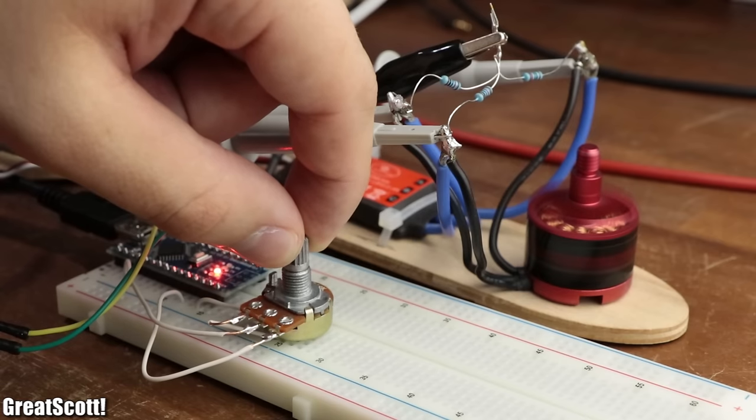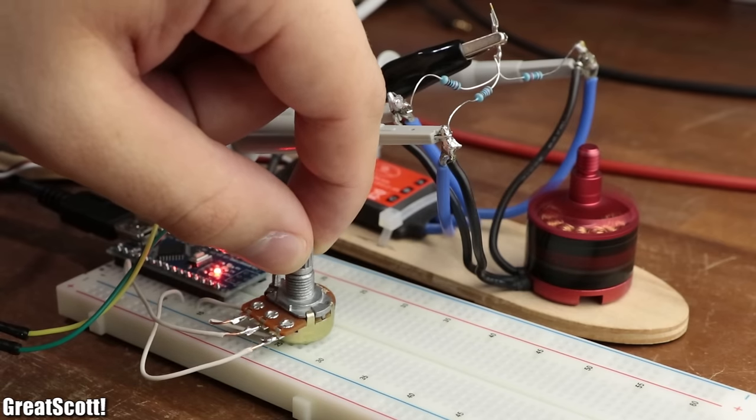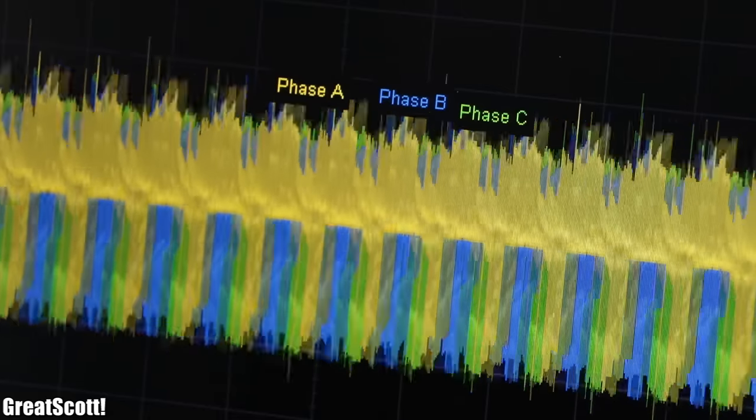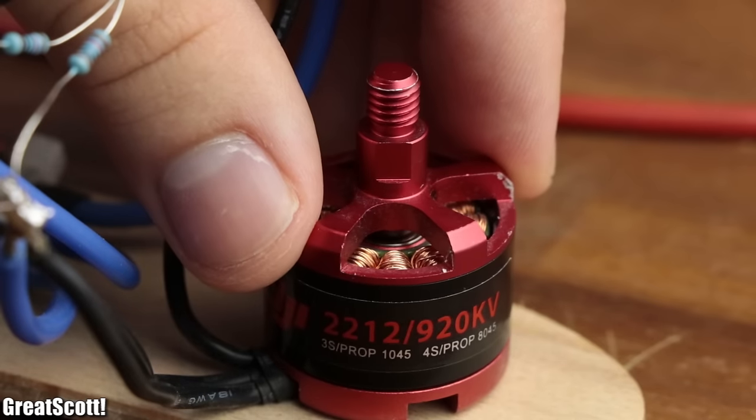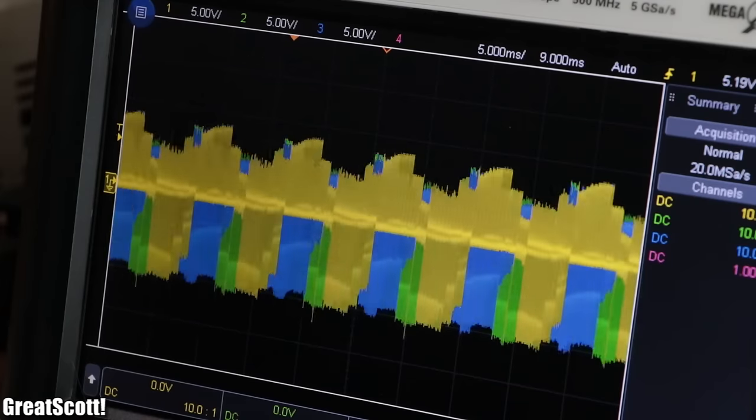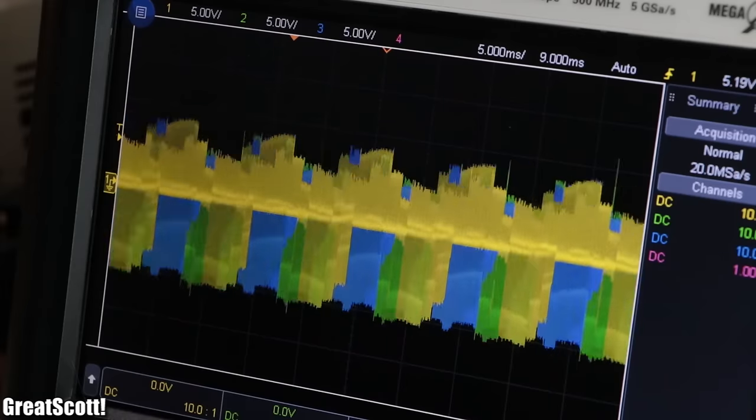And of course, if we want to increase the rotation speed of the motor, the ESC simply decreases the time for one step and thus increases the frequency of the rotation. So now that we know the theory, how does the ESC actually connect the phases to the corresponding voltage potential?